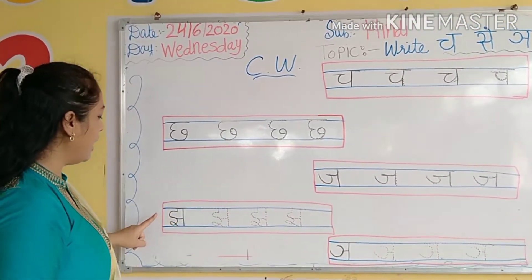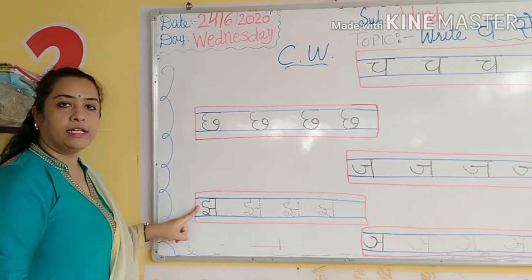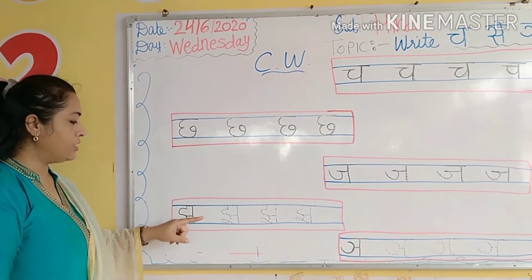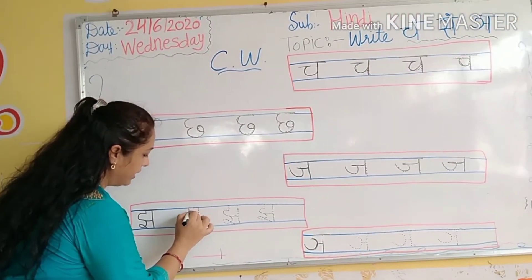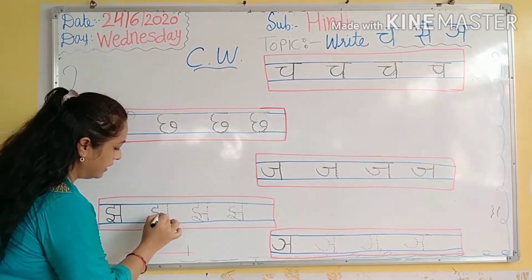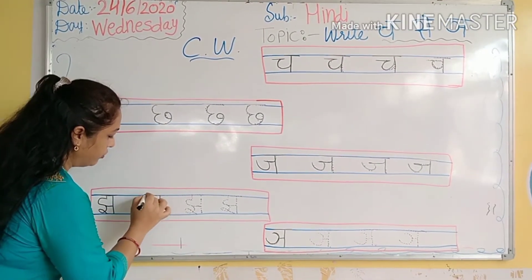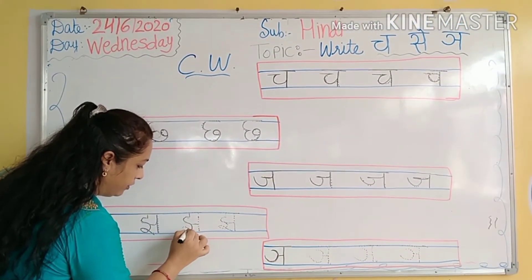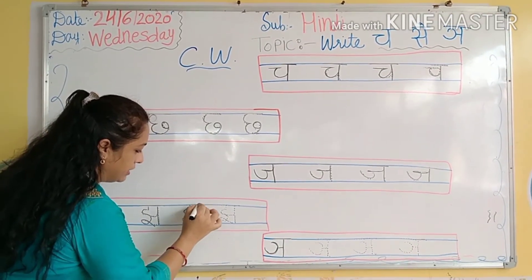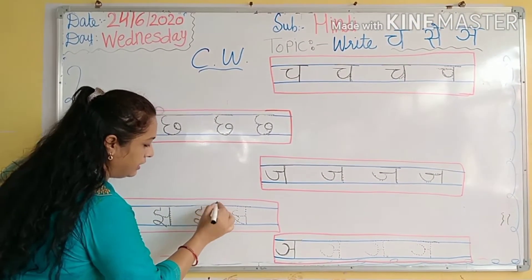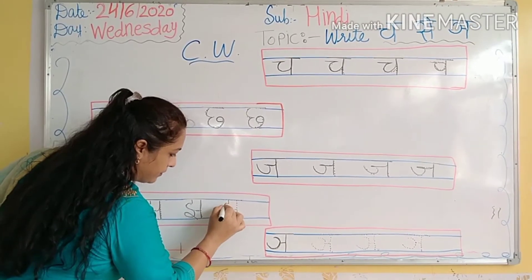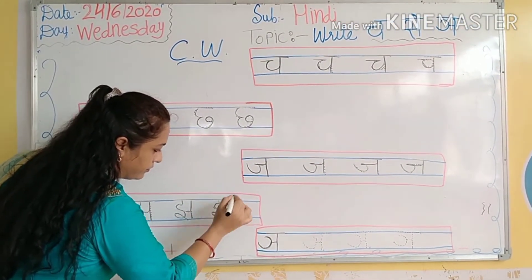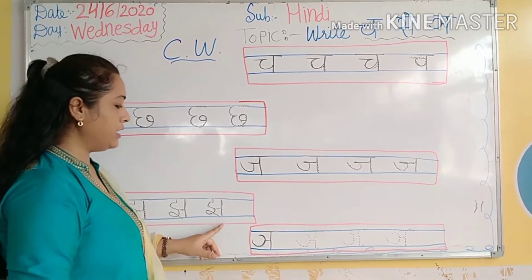Chh se chhat. Ye kya hai, kids? Kaun batayega? Chh se chhanda. Kya likha hai yahan pe? Chh se chhanda. Dots ke upar aapko trace karna hai. Aapko line complete karna hai.